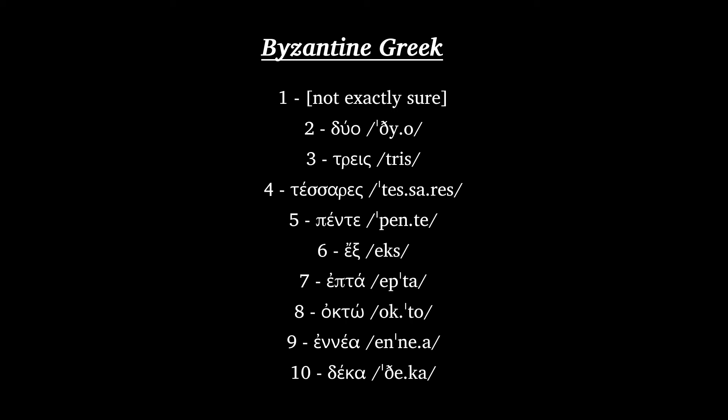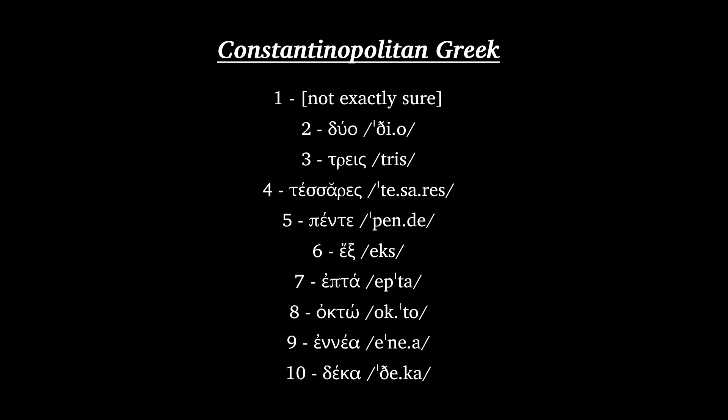Constantinopolitan Greek: Dio, Tris, Tessares, Pente, Hex, Hepta, Okto, Enea, Deka.